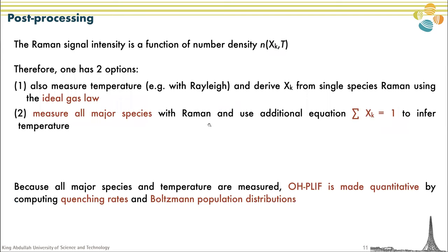It is important to note that the Raman signal intensity is a function of number density — so both temperature and species mole fraction. One option is to measure temperature directly, for example with Rayleigh, and derive the mole fractions using the ideal gas law. However, it was challenging to apply Rayleigh scattering in the HPCD, so we went with option two: measure all major species, use the constraint that the sum of all mole fractions equals one, and infer temperature and then all mole fractions. Because all major species mole fractions and temperature were measured, we can also make our OH-PLIF quantitative by computing quenching rates and Boltzmann population distributions.